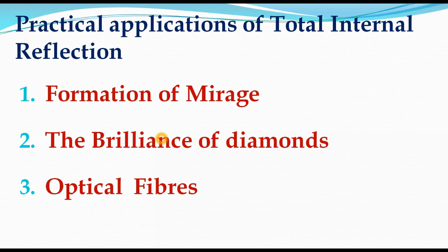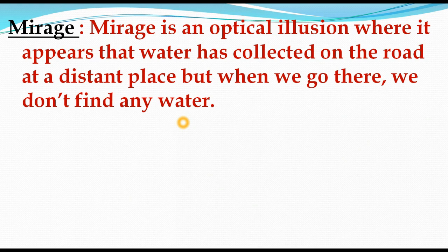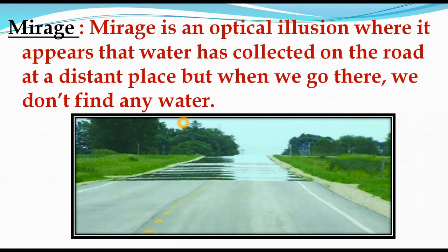I will explain the Formation of Mirage. A mirage is an optical illusion where it appears that water has collected on the road at a distant place, but when we go there we don't find any water. It occurs on hot days, particularly in summer. When we go along a road, water appears to be on the road, but when we go there we don't find any water. This optical illusion is called a Mirage, and it is formed by Total Internal Reflection.